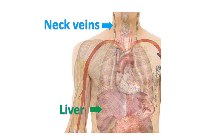Congestion of the superior vena cava manifests as dilated veins in the neck. Congestion of the inferior vena cava causes enlargement of the liver and collection of fluid under the skin of the legs. In late stages, fluid also collects inside the tummy. This state is known as right heart failure. Liver and kidney function may also deteriorate in advanced cases due to the back pressure of blood.